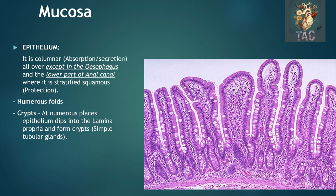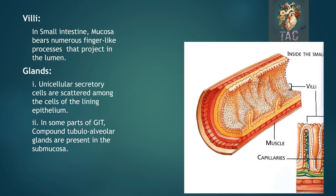So different modifications of the epithelium: generally it is simple columnar, with the exception of stratified squamous in the esophagus and lower part of the anal canal. It also contains unicellular glands — the goblet cells — present in between the simple columnar epithelial cells, and crypts are folds which are different modifications of this epithelium. There may be villi present in the small intestine — the mucosa bears numerous finger-like processes that project into the lumen. Gland cells are either unicellular, scattered among the lining epithelium, or in some parts of the GIT, compound tubulo-alveolar glands may be present in the submucosa as well.